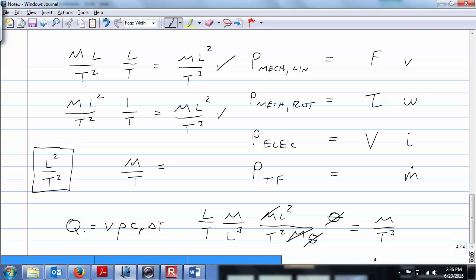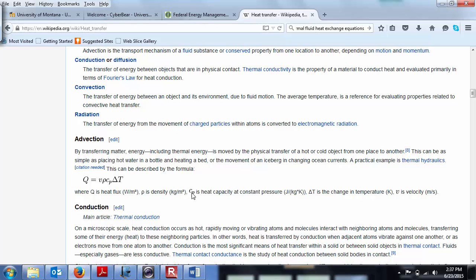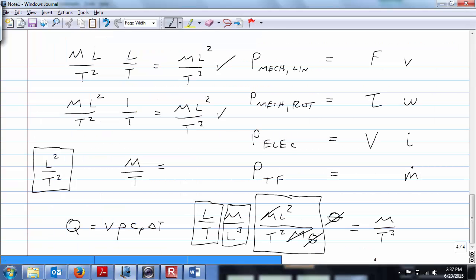So that equals mass per time cubed. Right? So Q equals V rho C sub P delta T. The dimensions of velocity are length per time. The dimensions of density are mass per unit volume, or mass per length cubed. These are the dimensions of the specific heat. So again, mass times length squared over time squared, that's energy. And then this other mass, this other temperature come along for the ride. See that? C sub P is heat capacity, joules per kelvin kilogram.